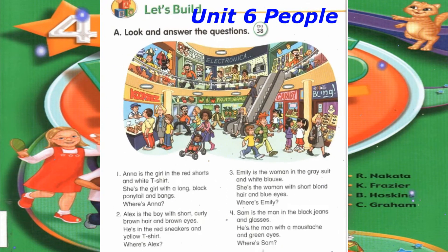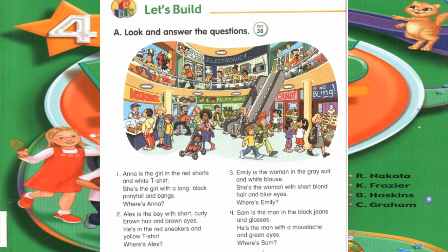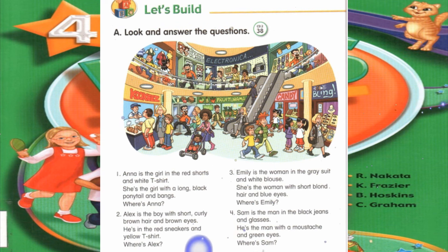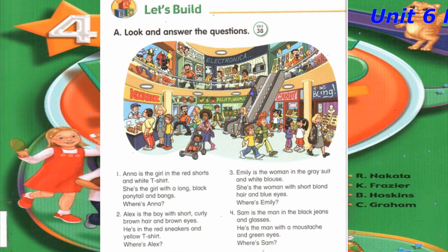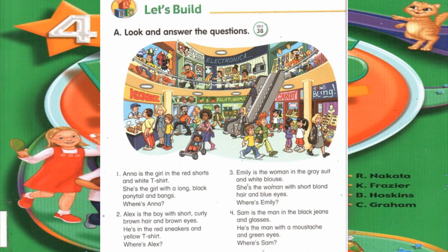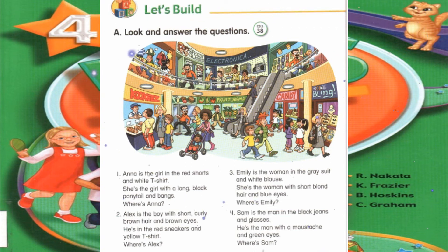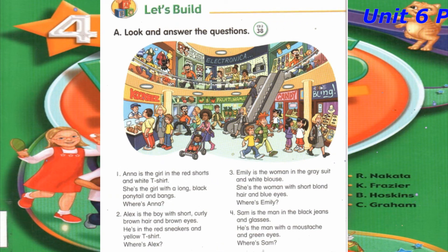Track 38, Let's Build A. Look and Answer the Questions. Number 1: Anna is the girl in the red shorts and white t-shirt. She's the girl with a long black ponytail and bangs. Where's Anna? Number 2: Alex is the boy with short, curly brown hair and brown eyes. He's in red sneakers and a yellow t-shirt. Where's Alex? Number 3: Emily is the woman in the gray suit and white blouse. She's the woman with short, blonde hair and blue eyes. Where's Emily? Number 4: Sam is the man in black jeans and glasses. He's the man with a mustache and green eyes. Where's Sam?